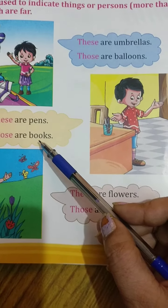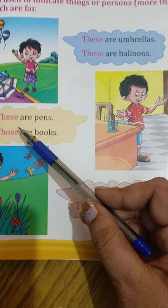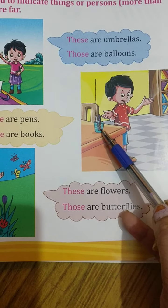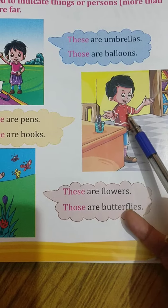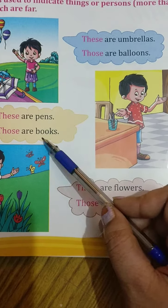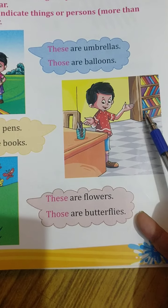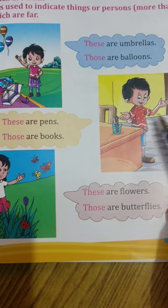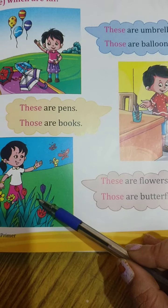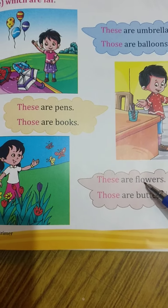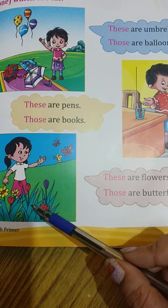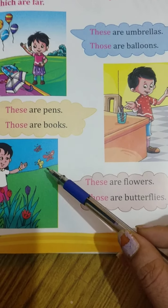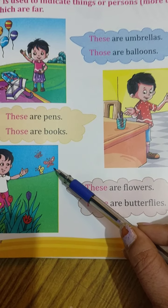Look at another example: 'These are pens' — because pens are more than one and near. 'Those are books' — because books are far and more than one. The next example: 'These are flowers' — flowers are nearby to the girl and more than one. 'Those are butterflies' — butterflies are far from the girl and more than one.